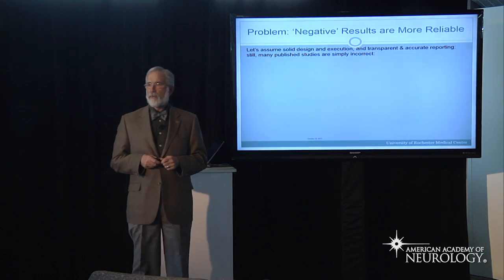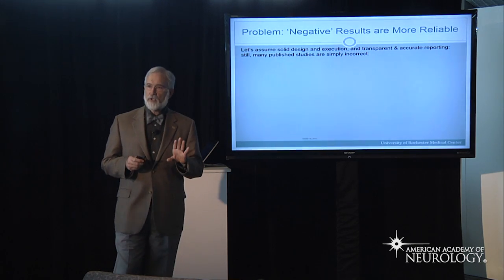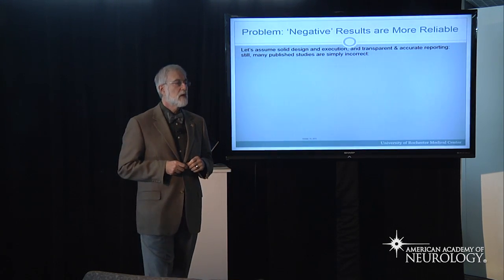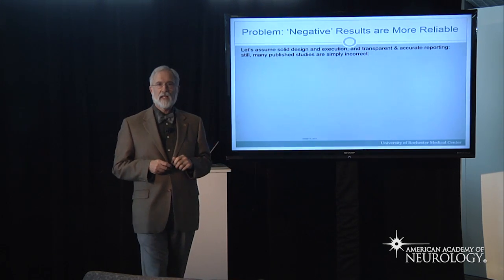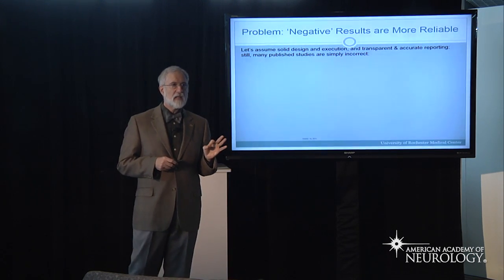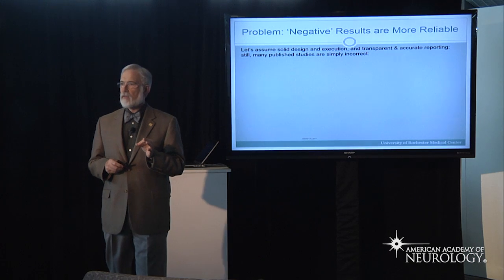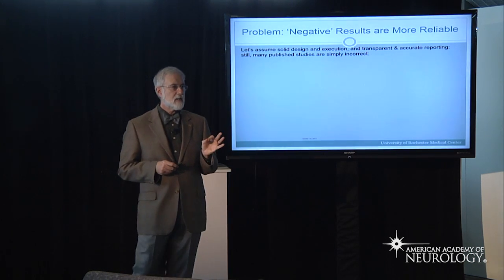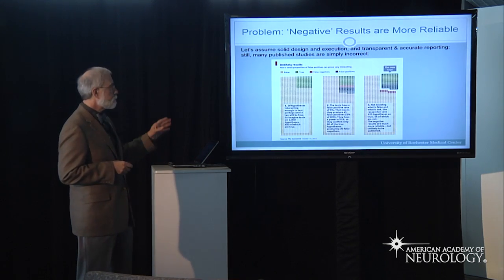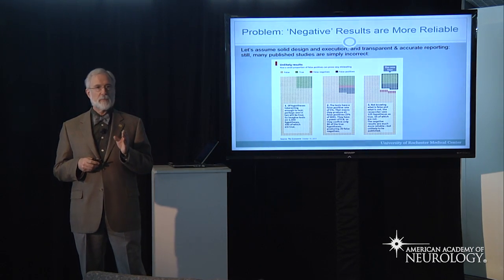Here's a really big problem in publishing, particularly the publishing of clinical trials. Let's assume for the moment that there's a perfectly designed study, which rarely happens, that the data analyses are handled perfectly, which rarely happens, that the reporting is entirely accurate and transparent, which rarely happens, and you as the reader then look at the trial to inform your practice. I'm going to show you a graphic originally published in The Economist in 2013 that goes through why many results are simply not accurate.